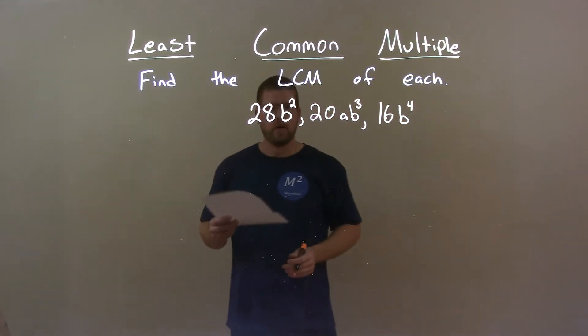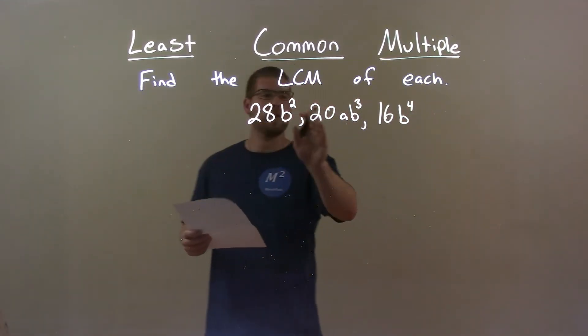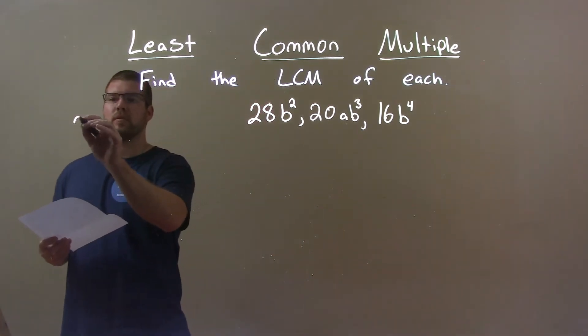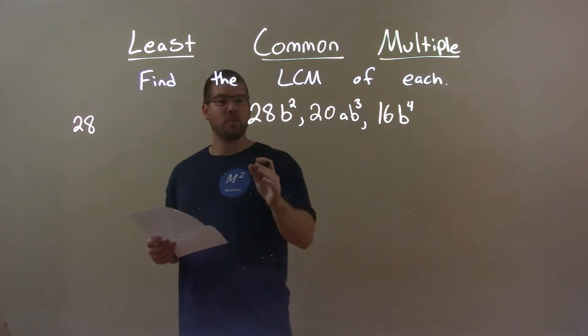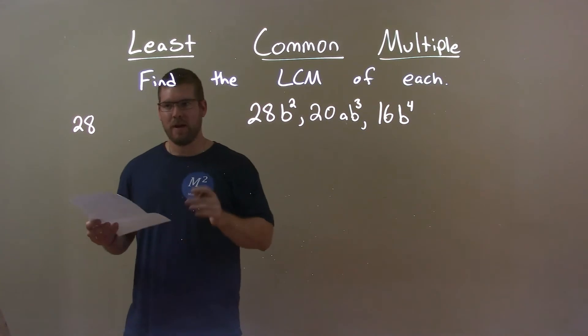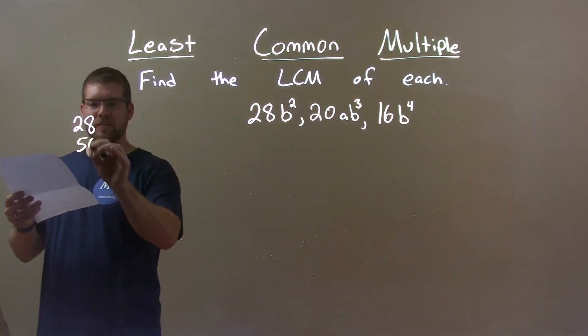Alright, so first thing I do is deal with my largest number which is 28, and I go through its multiples and find the first multiple that's divisible by 20 and 16. This is going to take a while. So, 28, 56, nope.